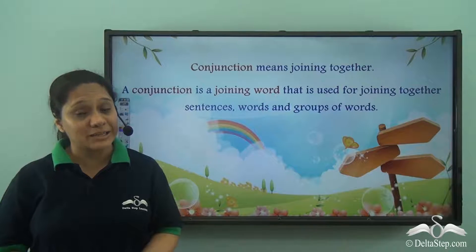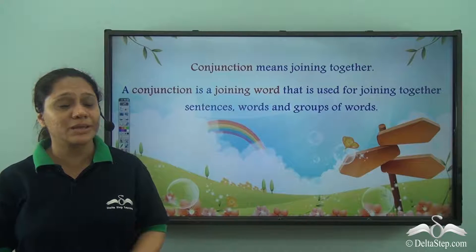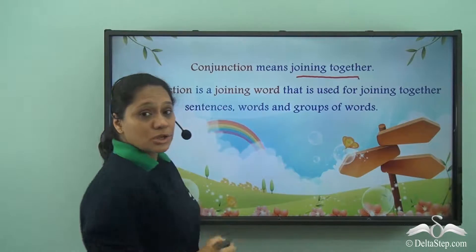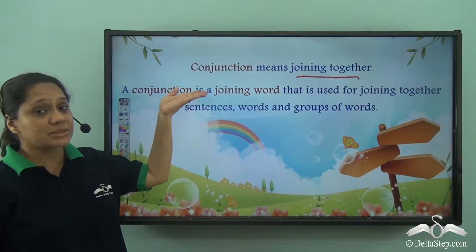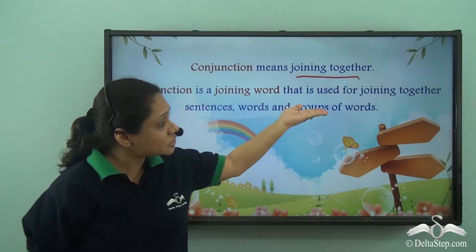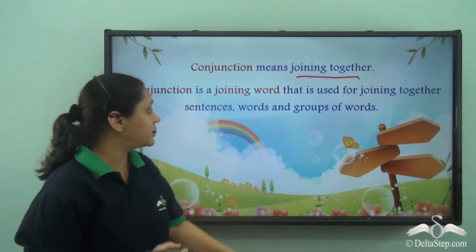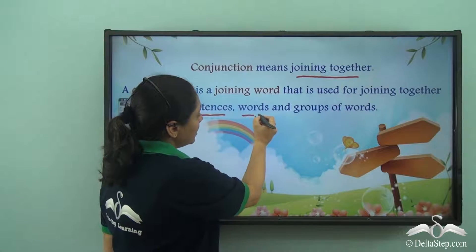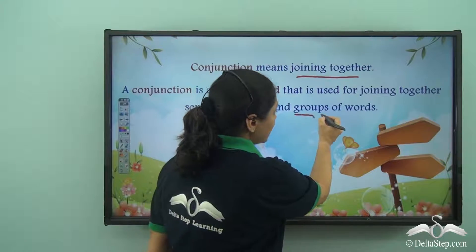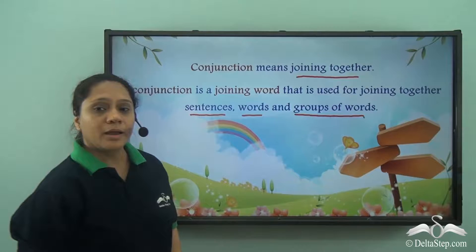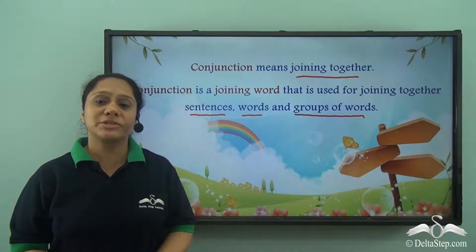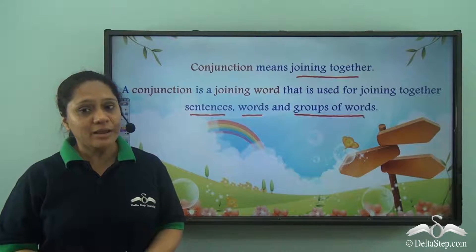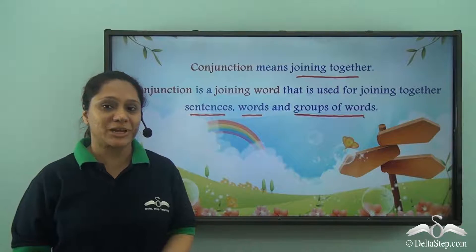We have learnt that conjunction means joining together, so a conjunction is a joining word that is used for joining together sentences, words and groups of words. We have learnt some common conjunctions like and, but, or. Today we will learn about some other conjunctions.